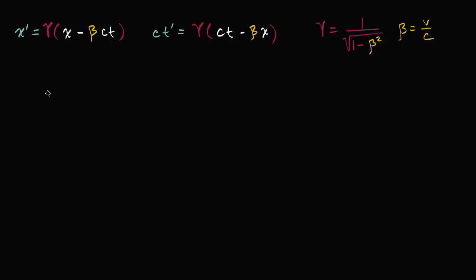We've spent several videos now getting familiar with the Lorentz transformations. What I want to do now, instead of thinking about what x prime and ct prime are in terms of x and ct, I want to think about what the change in x prime and the change in ct prime are going to be in terms of change in x and change in ct. And we'll see it's just going to involve some fairly straightforward algebraic manipulation.